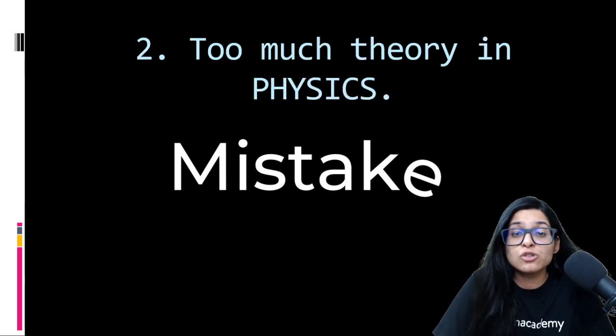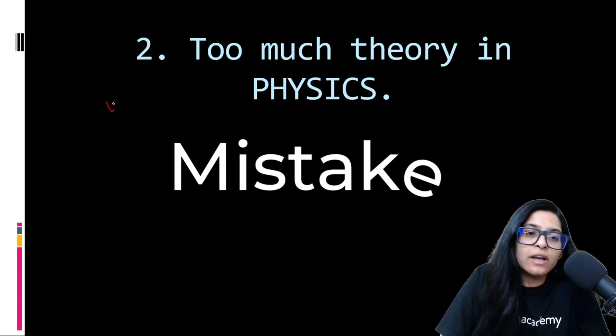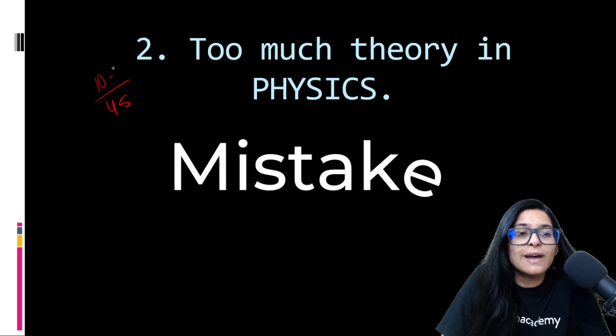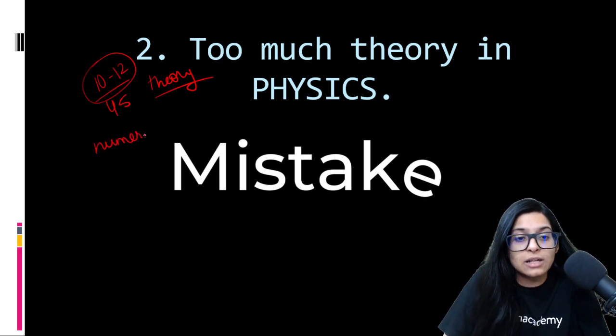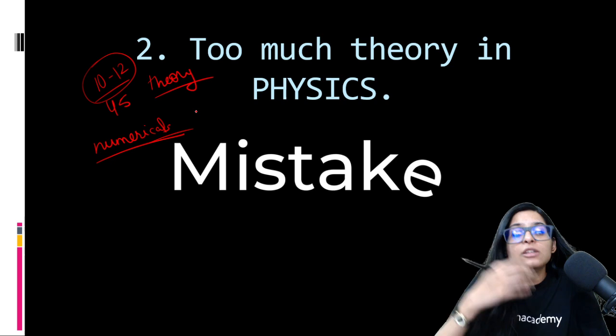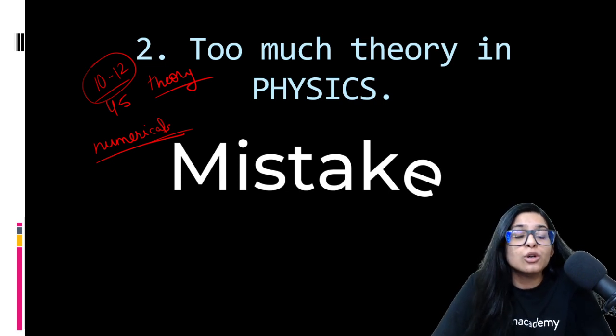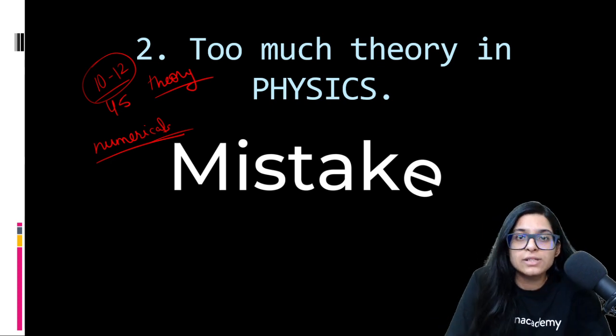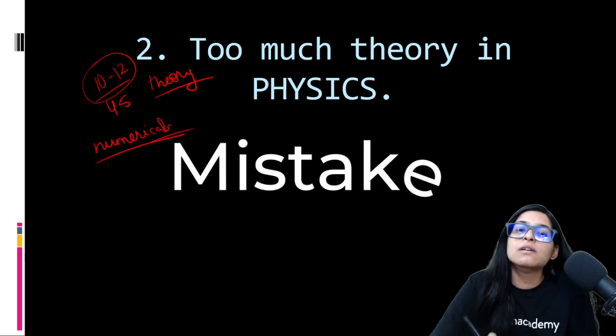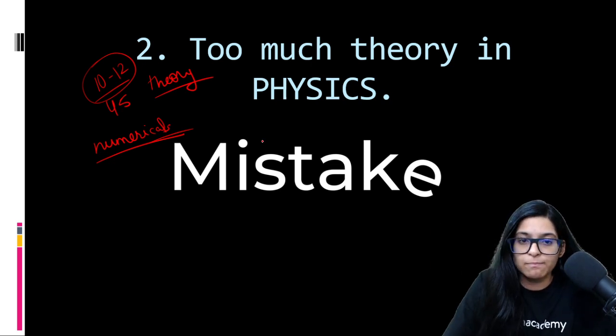Second mistake: too much theory in physics. Some theory is required in physics, but too much theory is not needed. What you have to do is more and more MCQ practice. Make a formula book.